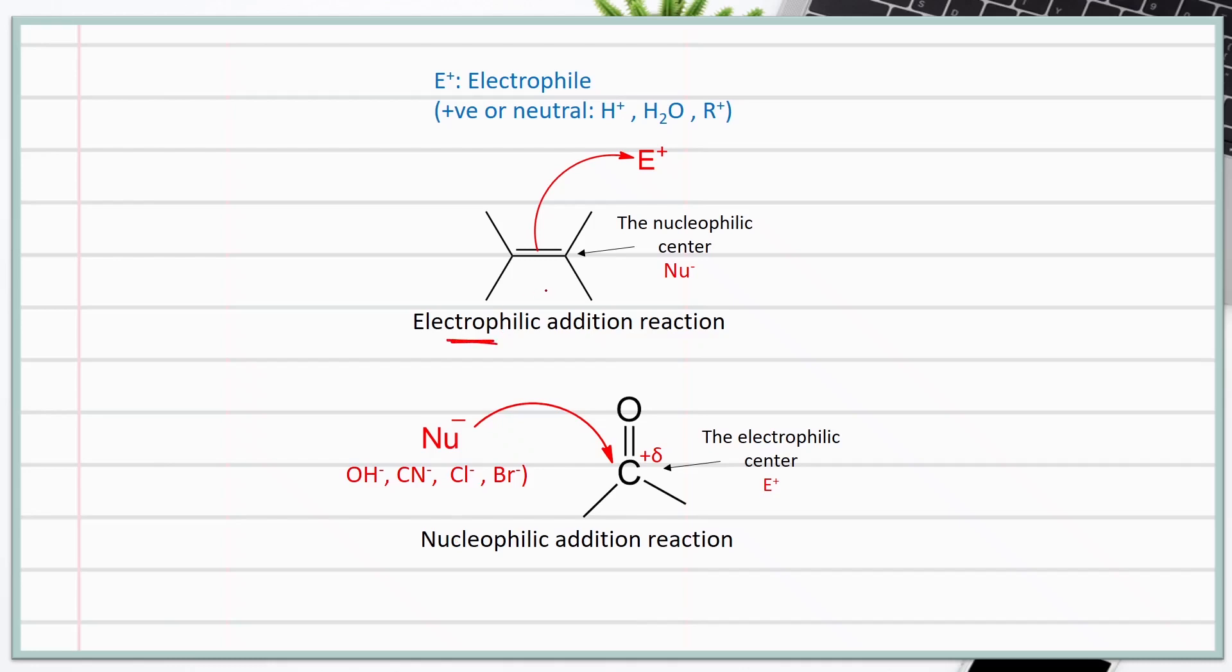Electrophilic addition happens when an organic compound contains a double bond. This double bond acts as a nucleophile and attacks an electrophile, such as the hydrogen of hydrochloric acid.